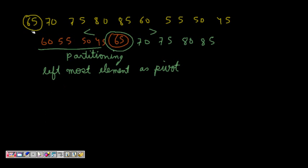The leftmost element is the pivot, so I start from here. I have a pointer starting just after 65 on the left and a pointer at the rightmost element. Everything to the left should be smaller than 65 and everything to the right should be greater than 65. I see 70 is greater than 65, so I stop there. And 45 is less than 65, so I stop there on the right.